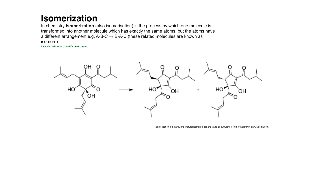The bitterness in our beer is created by converting the alpha acids. This conversion is called isomerization. That's a fancy word, but it just means we rearrange the organization of the molecule without changing the atoms inside the molecule. This new molecule happens when we boil our beer over time, and it's what makes our beer bitter.